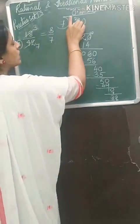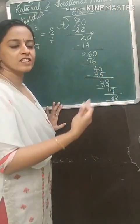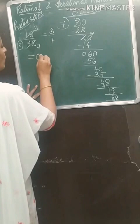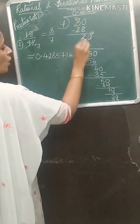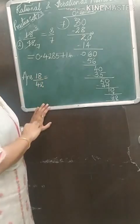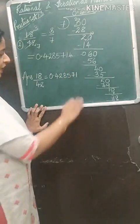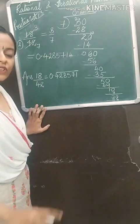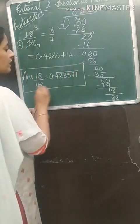We are again getting a recurring decimal form. The recurring decimal form is 0.428571 — then again 4, 2, 8, 5, 7, 1 repeating. Is it ending? No. So this is non-terminating recurring decimal form: 0.428571 recurring. For the digits which are recurring we will put a bar. So 18 upon 42 equals 0.428571 bar — non-terminating recurring decimal form.